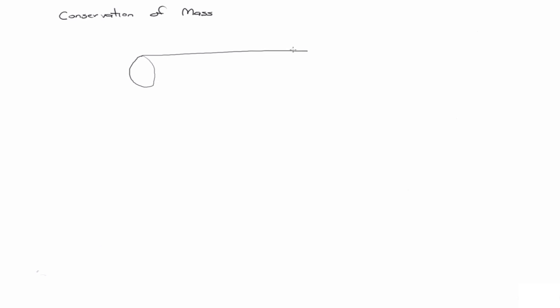The way you were probably introduced to conservation of mass was possibly with some one-dimensional body. We're talking about flow in a porous media here, so perhaps you imagine this is a core that you're flowing fluid through. Usually you would take some small slice of this, possibly of differential length x, where this is the x dimension.